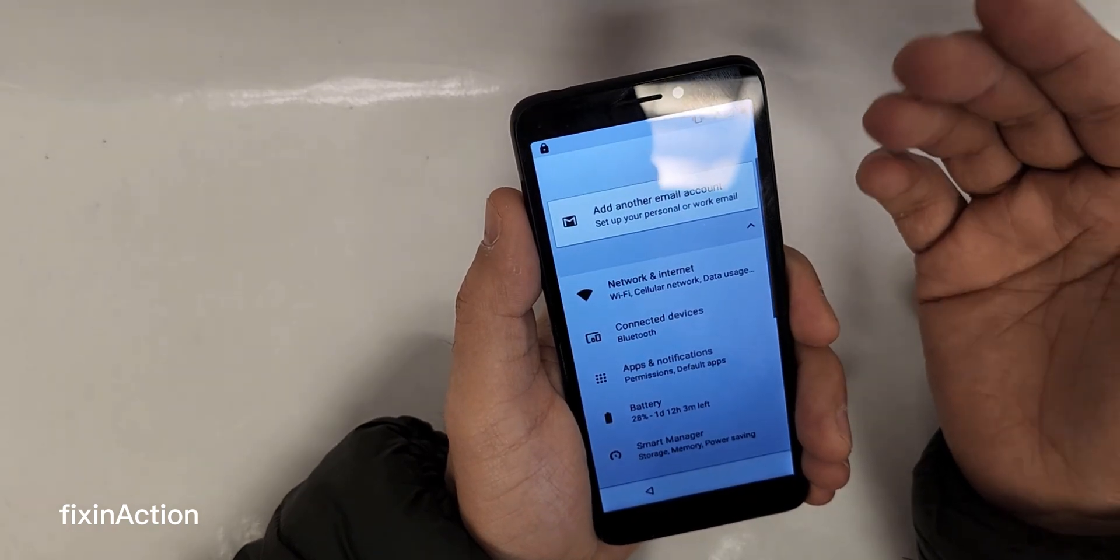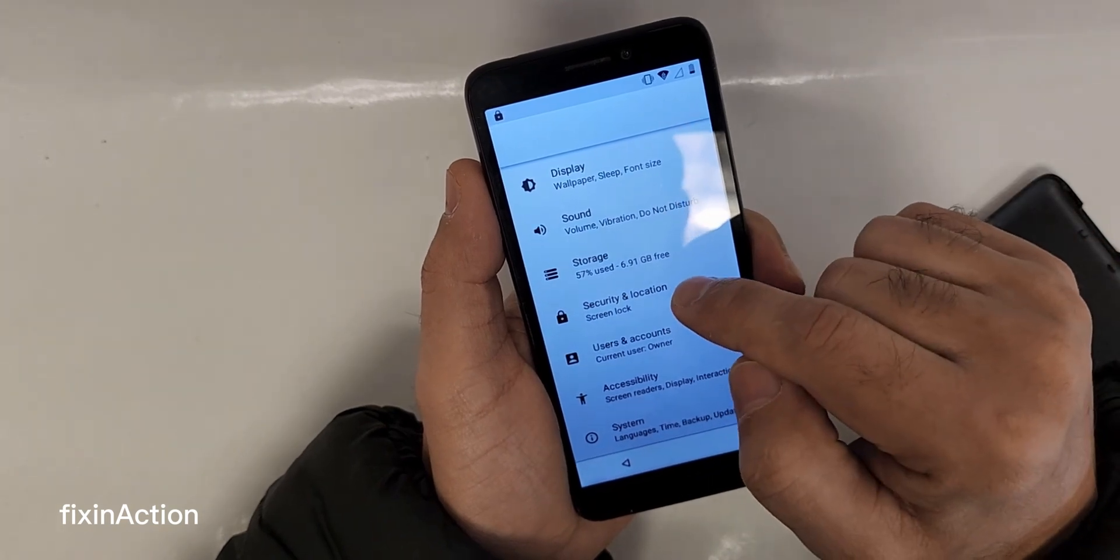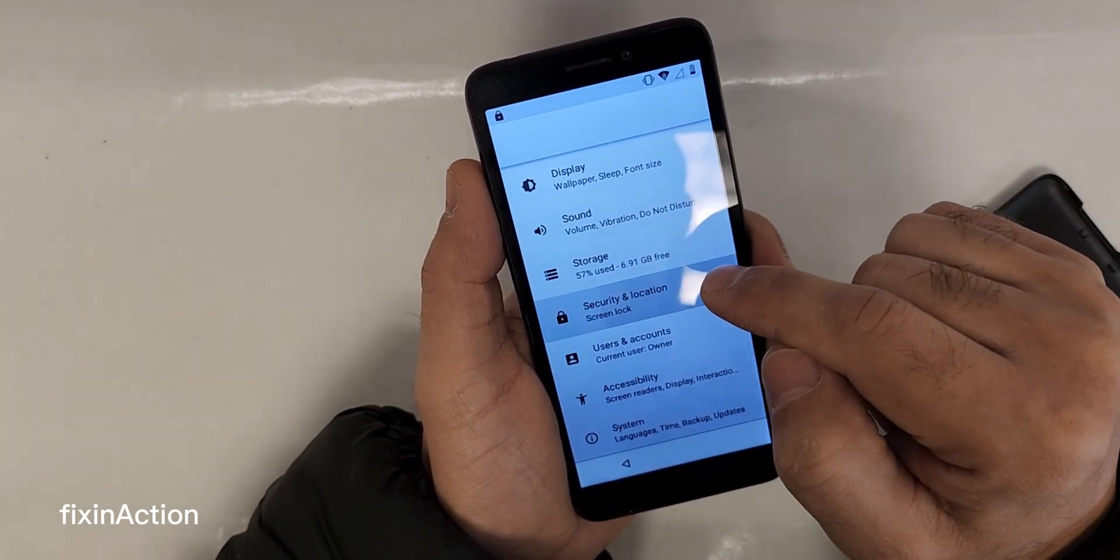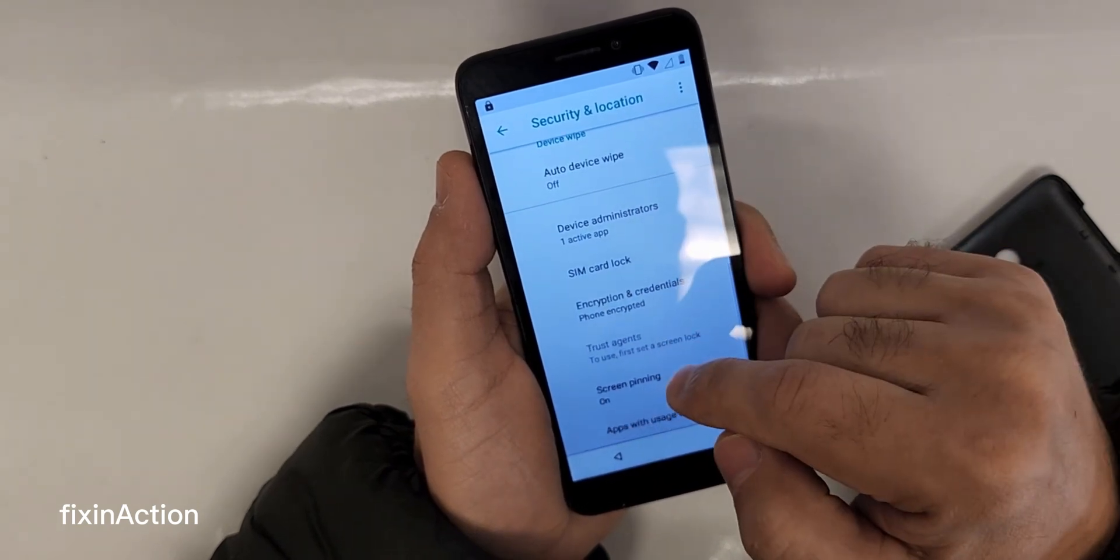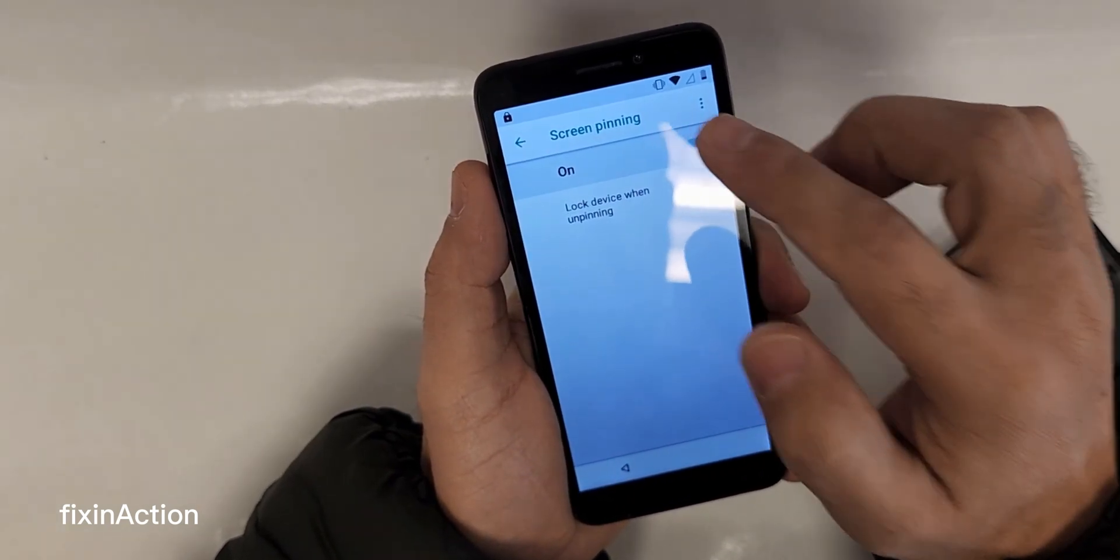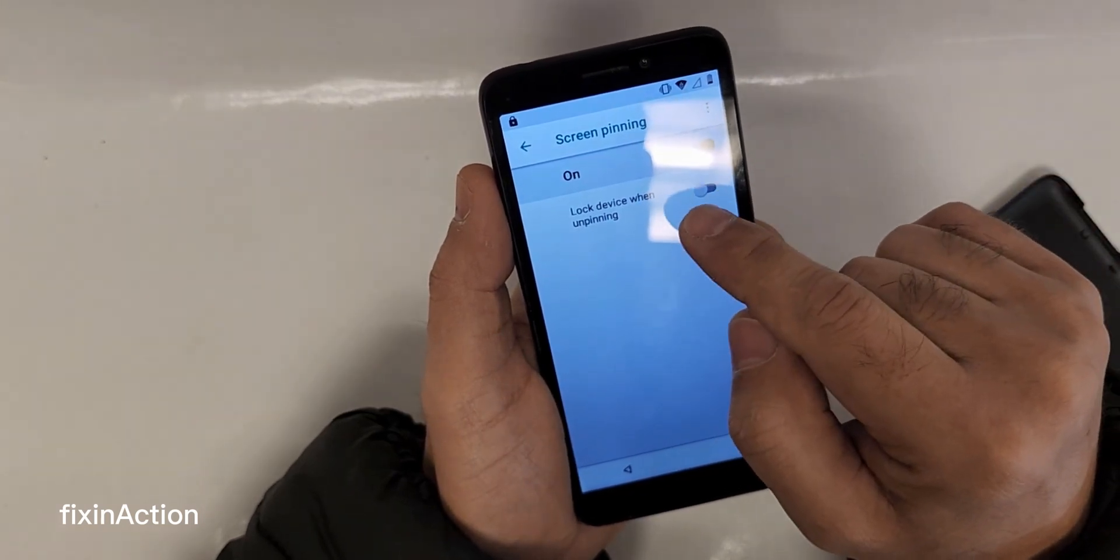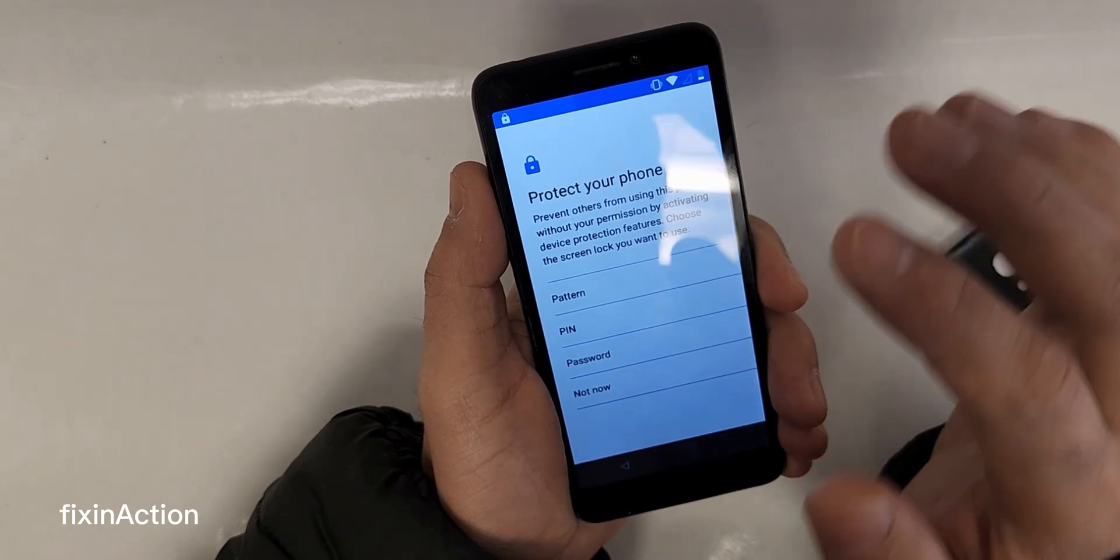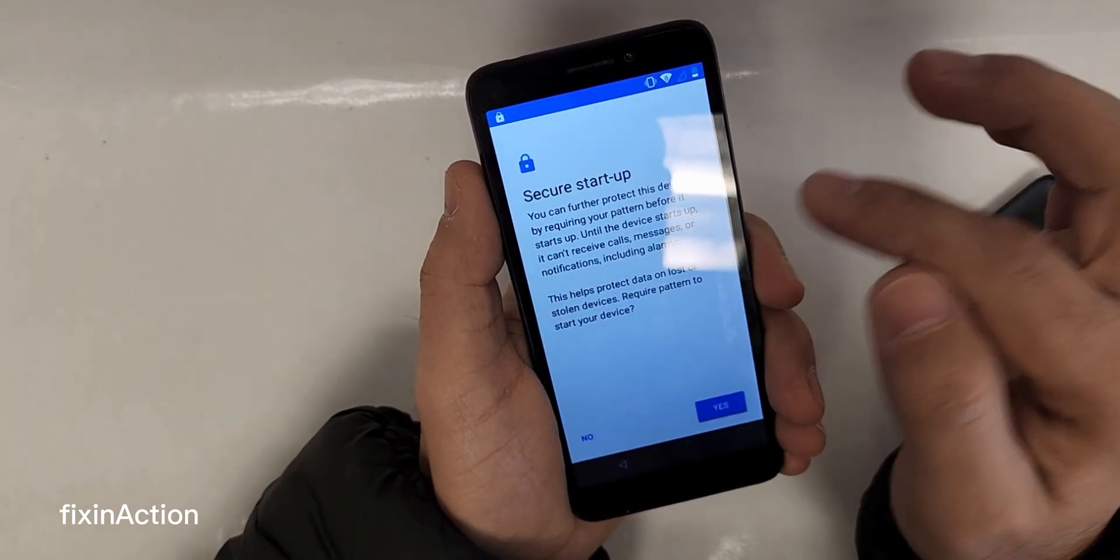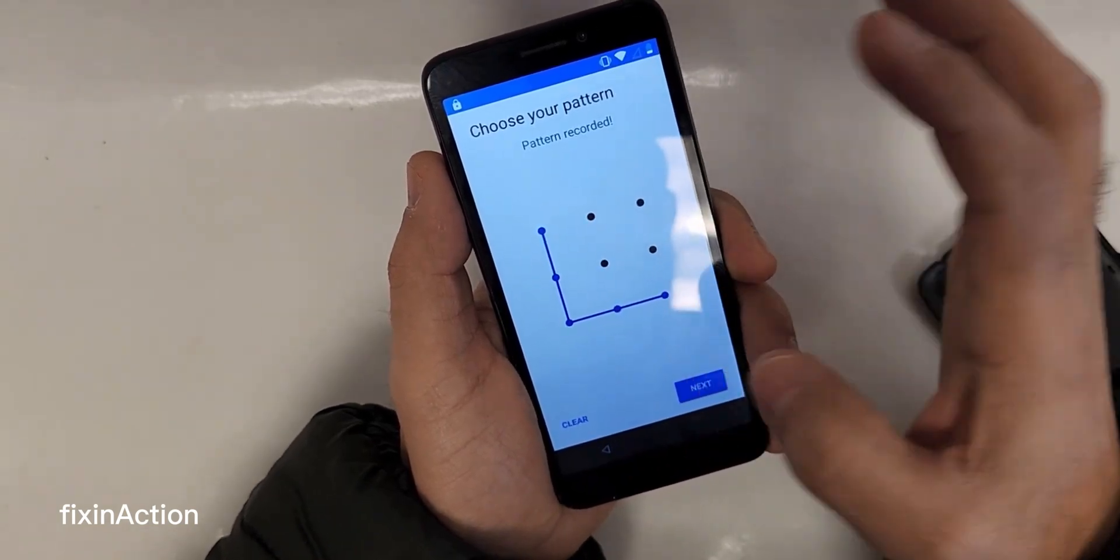It will open up phone settings. After that, swipe up and here you'll find Security and Location. Swipe up, here you will find Screen Pinning, so make sure to turn this on if it's off. Plus you have to turn on Lock Device When Unpinning. Here we will put a pattern lock on it.